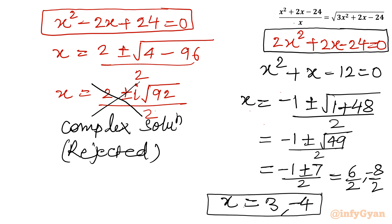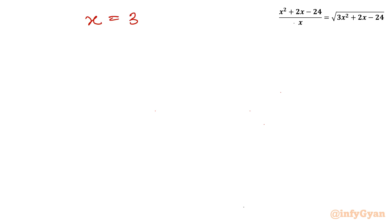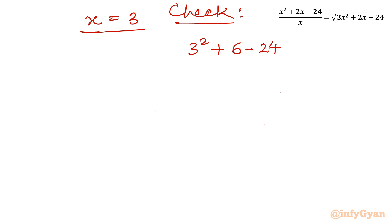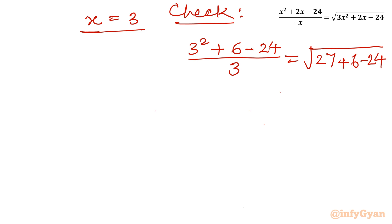Both values are real, but let us check them. Verify x = 3: left hand side = (9 + 6 - 24) / 3 = -9/3 = -3. Right hand side = √(27 + 6 - 24) = √9 = 3. Left hand side is -3 and right hand side is 3, so x = 3 does not satisfy the equation.